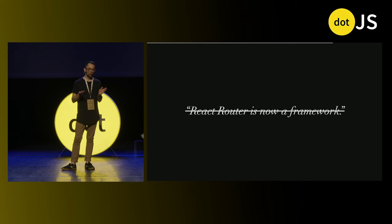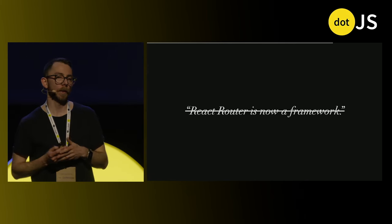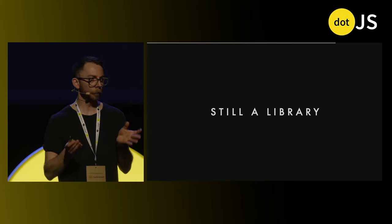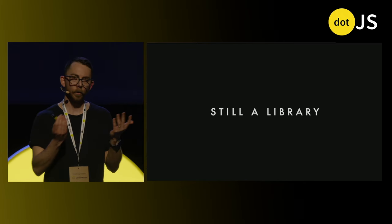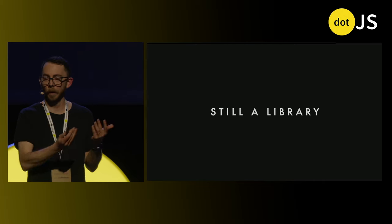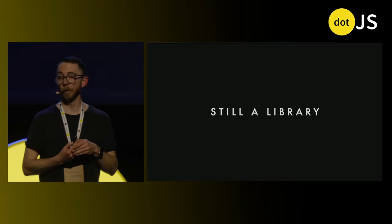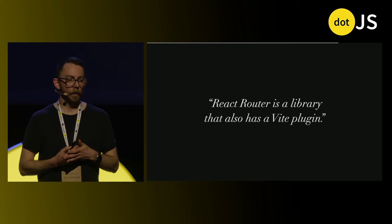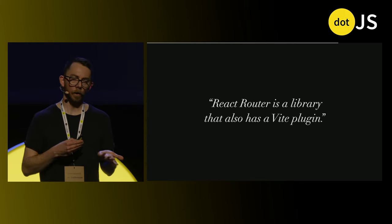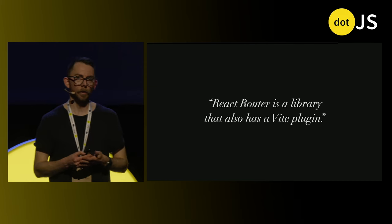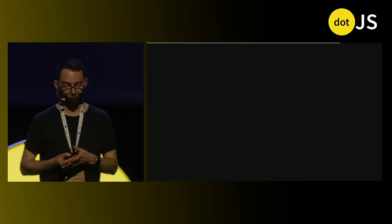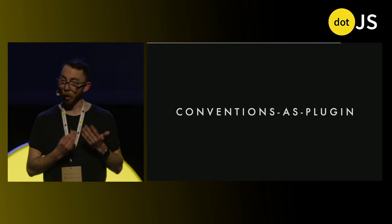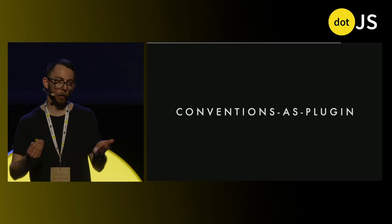One way you could look at this move is to say that React Router is now a framework, and this is a totally valid position to take. But I naturally found myself thinking about it slightly differently. React Router is still a library — you can use it just like React, in any project with or without Vite, with or without a server, with or without a build step. Instead, I've been framing it as: React Router is a library that also has a Vite plugin — shipping those conventions as a plugin if you want to use them. Conventions as a plugin is a really interesting pattern.